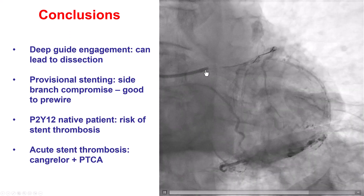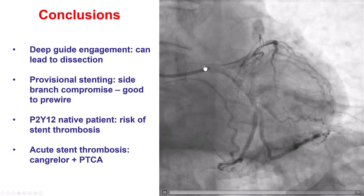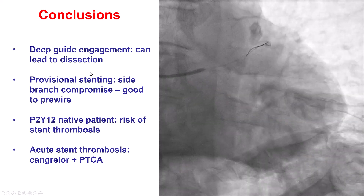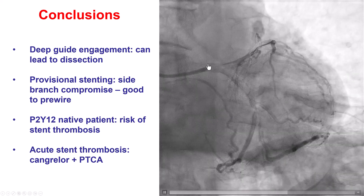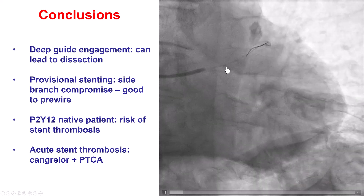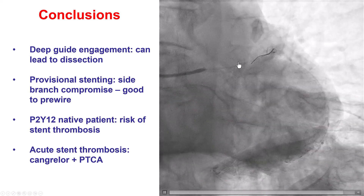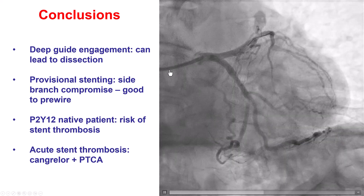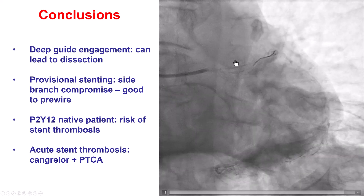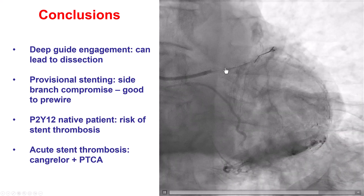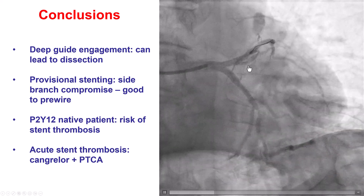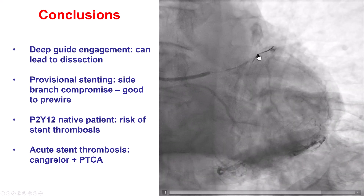This case provides us with several lessons. The first is that deep engagement of the guide catheter may lead to dissection — something to always keep in mind, trying to minimize how deep the guide catheter is engaged. If a dissection happens, it is critical to keep the wire in position and place a stent promptly, as was done in this case. The second problem was compromising the ostium of the diagonal branch after stenting. Fortunately, we had a wire in it, so we rewired and performed kissing balloon inflation, which restored good flow into that branch.